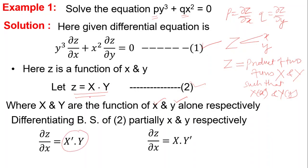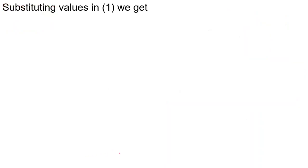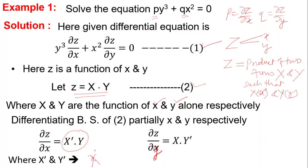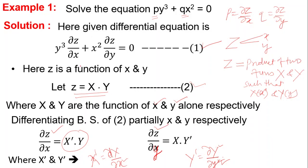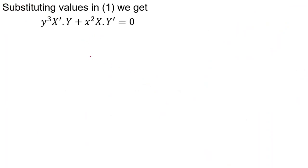Similarly, differentiating partially with respect to y gives del z/del y = X·Y', where Y' = dY/dy. Now substituting these values in equation one — that is, del z/del x and del z/del y — we get y³·(X'·Y) + x²·(X·Y') = 0.